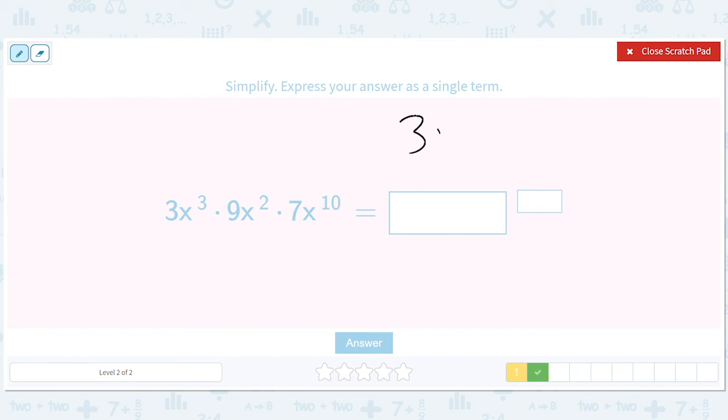Three times nine times seven. So that's going to give us 63 times three, which is 189. And then we'll have x to the 3 plus 2 plus 10, which is x to the 15th. Okay. So that's going to give us 189x to the 15th.